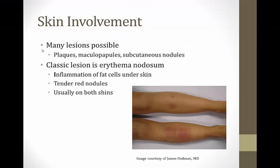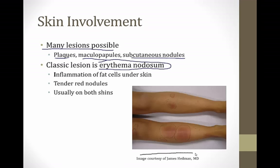The skin gets involved in sarcoid and many lesions are possible — plaques, maculopapules, and subcutaneous nodules have all been described. But the classic sarcoid lesion to know for your boards is erythema nodosum, shown in this picture. It presents as red splotches, usually on the shins, that are inflamed, tender, and painful. It's caused by inflammation of fat cells under the skin from granulomas, and is typically bilateral on both shins.